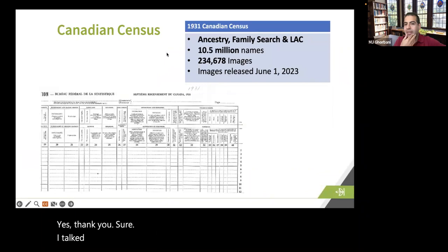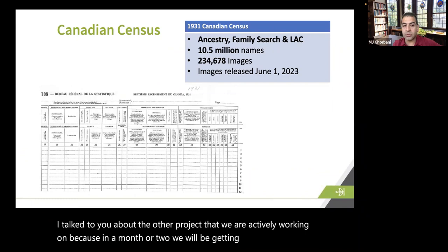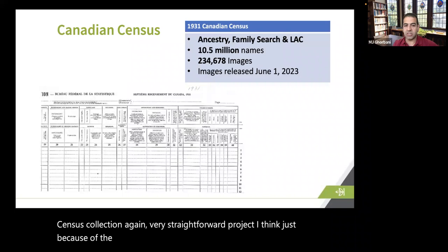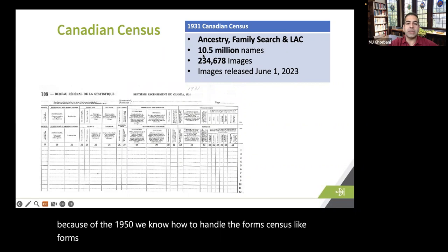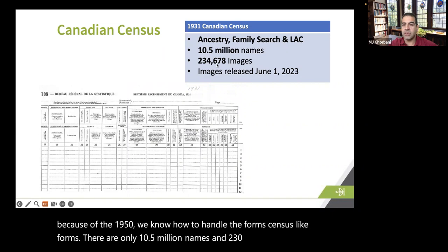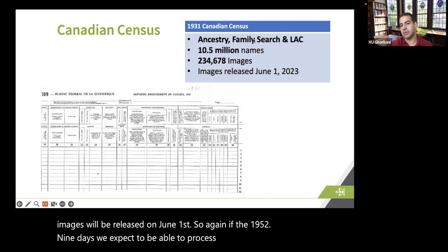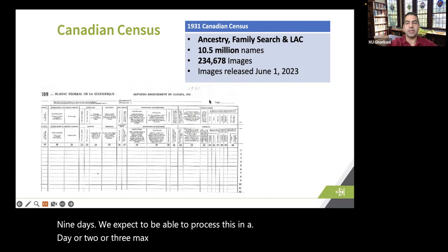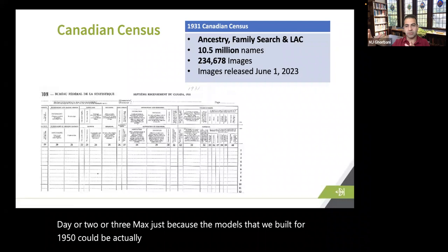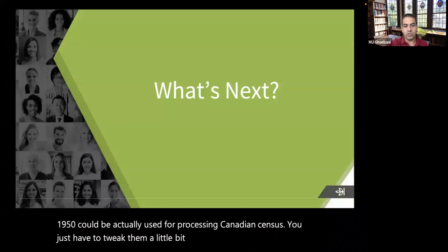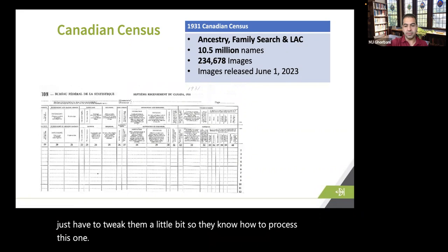The other project we're actively working on is the Canadian Census. In a month or two, we'll be getting the Canadian Census Collection — a very straightforward project because of our experience with the 1950 census. There are 10.5 million names and 230,000 images, with images to be released on June 1st. If the 1950 took nine days, we expect to process this in a day or two or three max, since the models built for 1950 can be used for Canadian census with just a few tweaks.